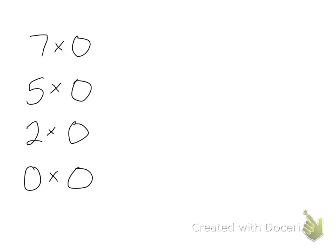So here I have 7 times 0, and we read that as 7 groups of 0. Remember that multiplication sign means groups of. So 7 groups of 0. Well, if I have 7 groups but there's 0 in each group, I still have only 0 people. What about 5 groups of 0? Still equals 0. 2 groups of 0? Still 0.